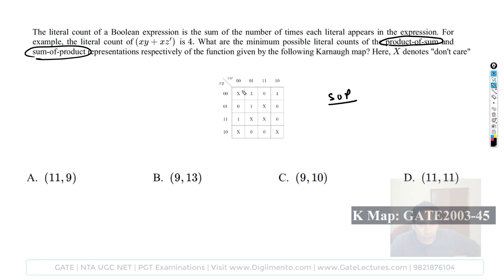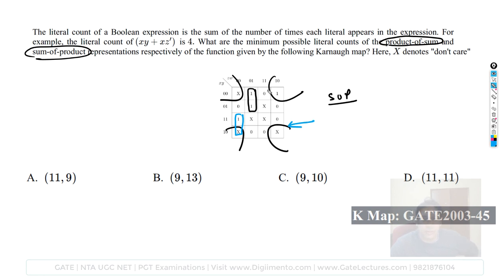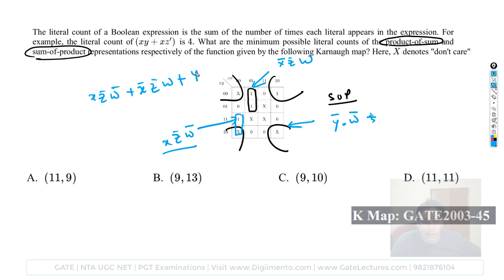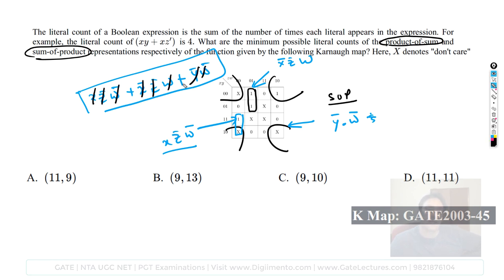For the SOP: using three sub-cubes — the four corners, one middle group, and another group — the terms are X·Z-complement·W-complement, X-complement·Z-complement·W, and Y-complement·W-complement. Counting literals: 1+2+3+4+5+6+7+8 = eight literals total in the SOP expression. However, none of the given options show eight, so the options appear to contain errors.